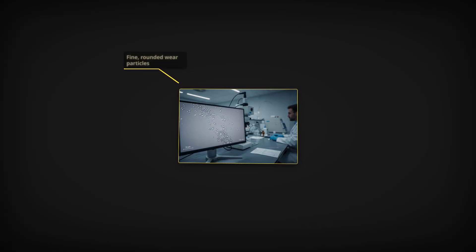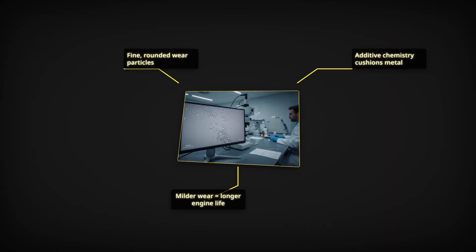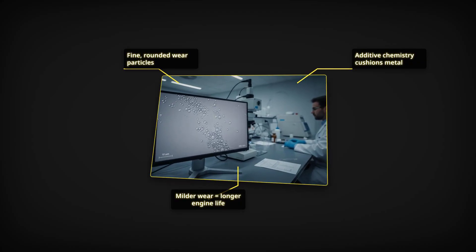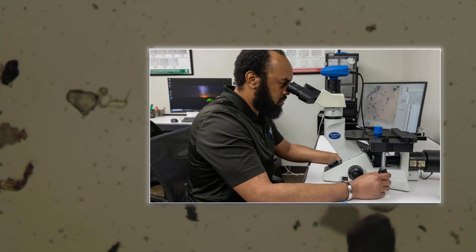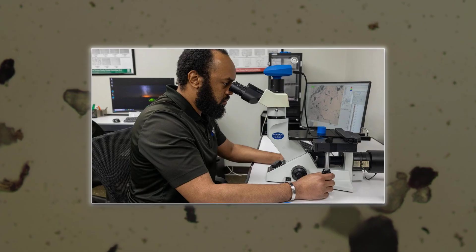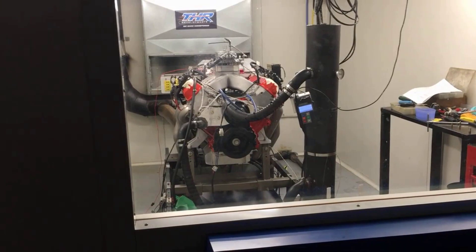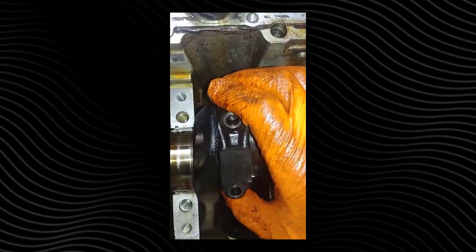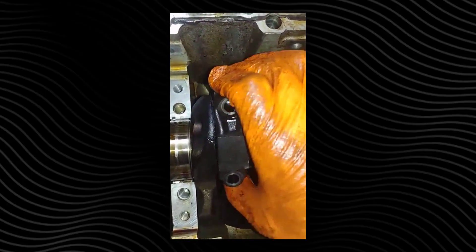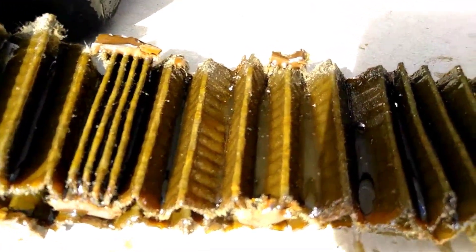In recent ASTM analyses, Havoline samples showed a predominance of fine, rounded particles, evidence of mild controlled wear, rather than the sharp cutting debris that signals aggressive metal on metal contact.